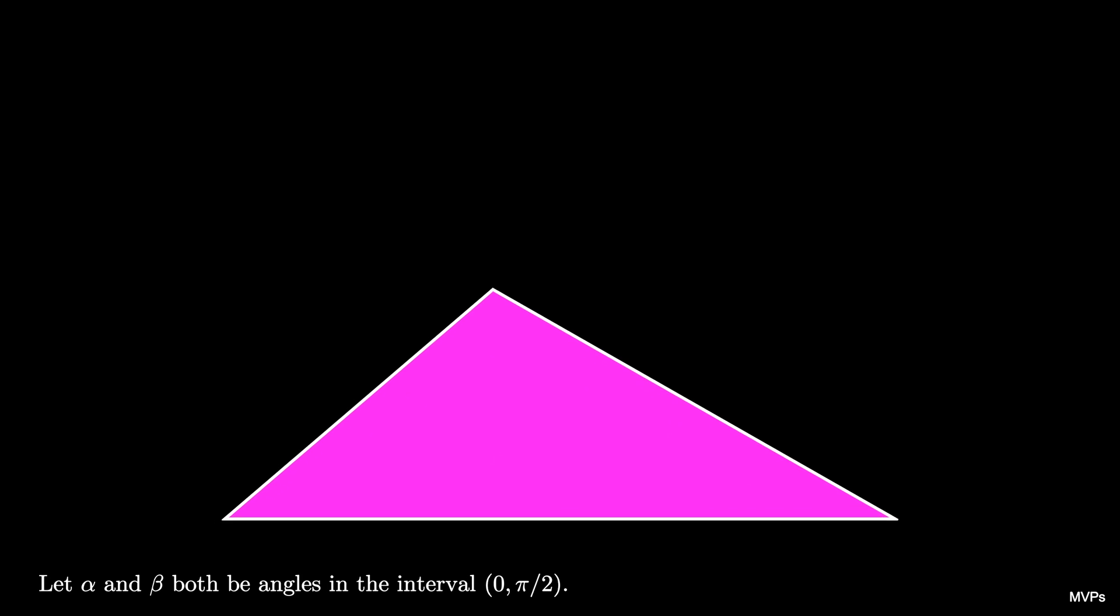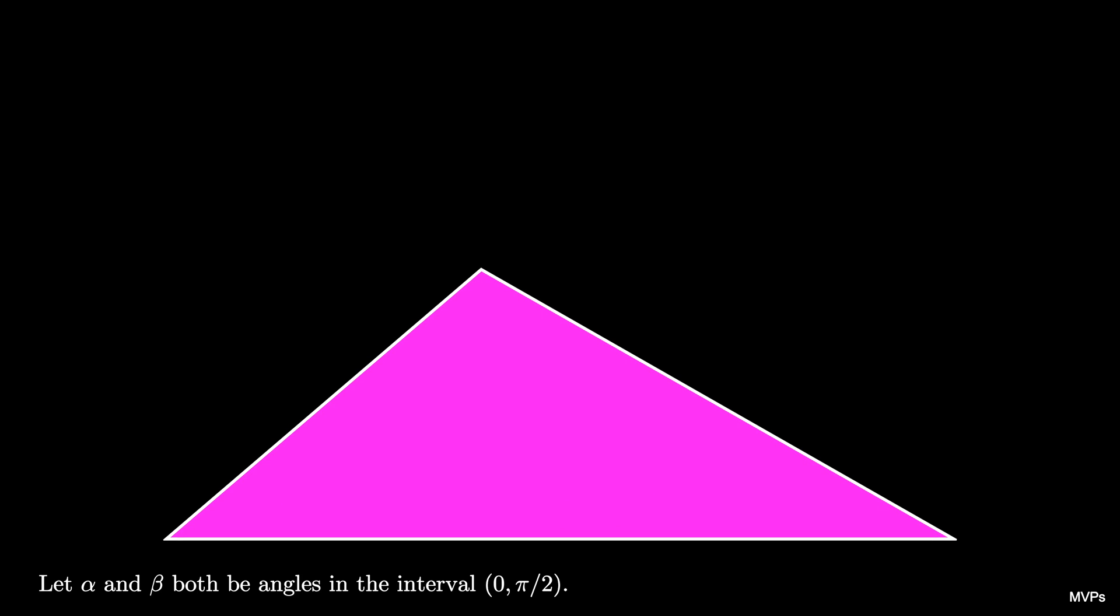Draw a triangle with horizontal base and an altitude that cuts the triangle into pieces with angle alpha and angle beta. Let's suppose that the legs on this triangle are called A and B.